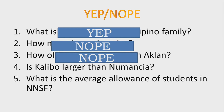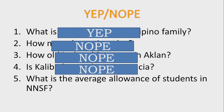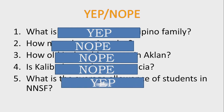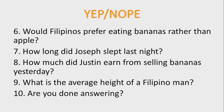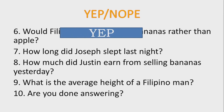Number four: Is Kalibo larger than Umansha? Answer: Nope. We could just research or take a look at historical facts or any documents that can show us the area of Umansha and Kalibo. Number five: What is the average allowance of students in NNSF? Yep, we need a statistical tool in answering this question. Number six: Would Filipinos prefer eating bananas rather than apples? Answer: Yep — we need to gather data and compare it in order to answer this.